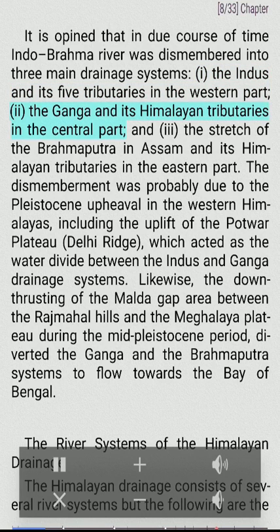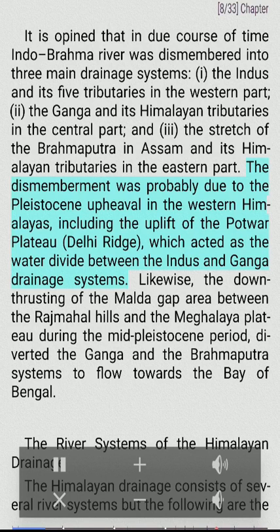It is opined that in due course of time, the Indo-Brahma river was dismembered into three main drainage systems: (i) the Indus and its five tributaries in the western part, (ii) the Ganga and its Himalayan tributaries in the central part, and (iii) the Brahmaputra in Assam and its Himalayan tributaries in the eastern part. The dismemberment was probably due to the Pleistocene upheaval in the western Himalayas, including the uplift of the Potwar Plateau and the Delhi Ridge, which acted as the water divide between the Indus and Ganga drainage systems.